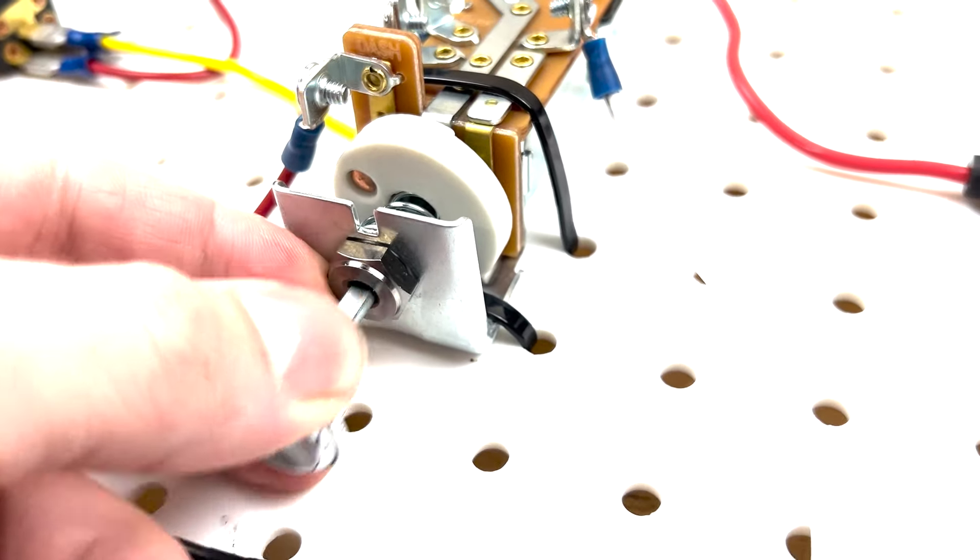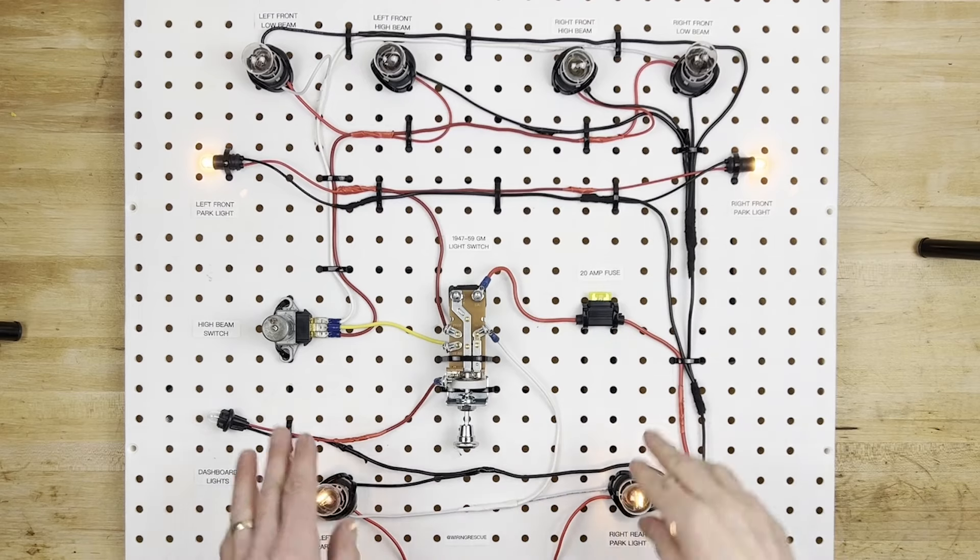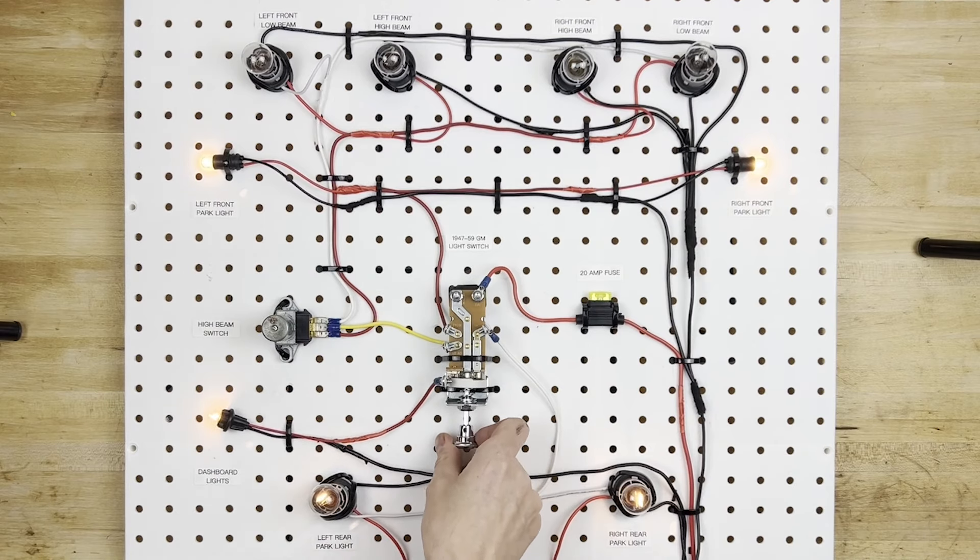It is actually really easy to wire, and if you pull it out just one notch, you get your rear parking lights and your front parking lights, and then you have your dashboard light, which is dimmable if you rotate the knob like this.